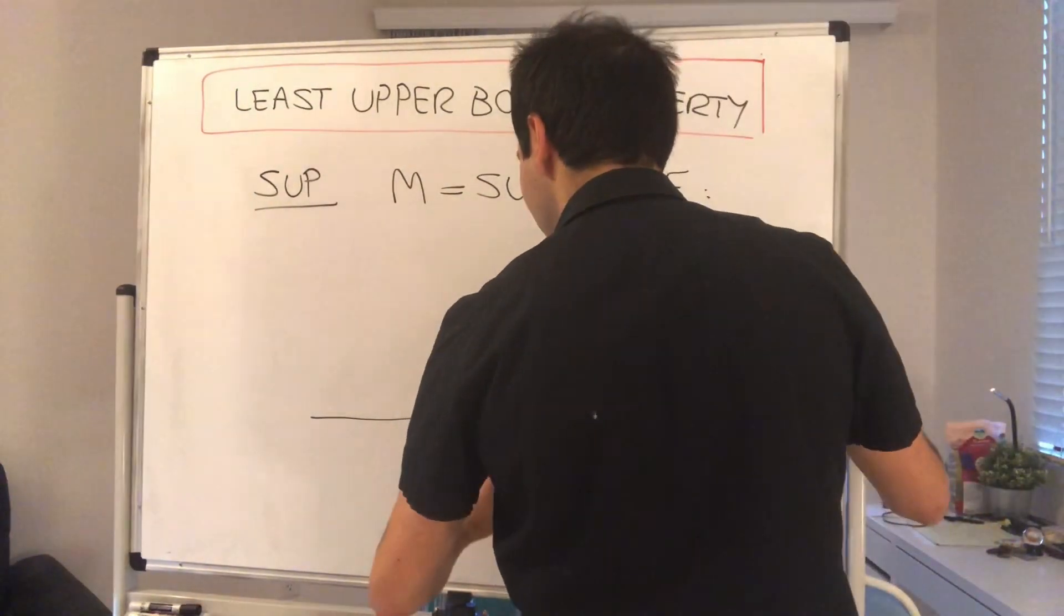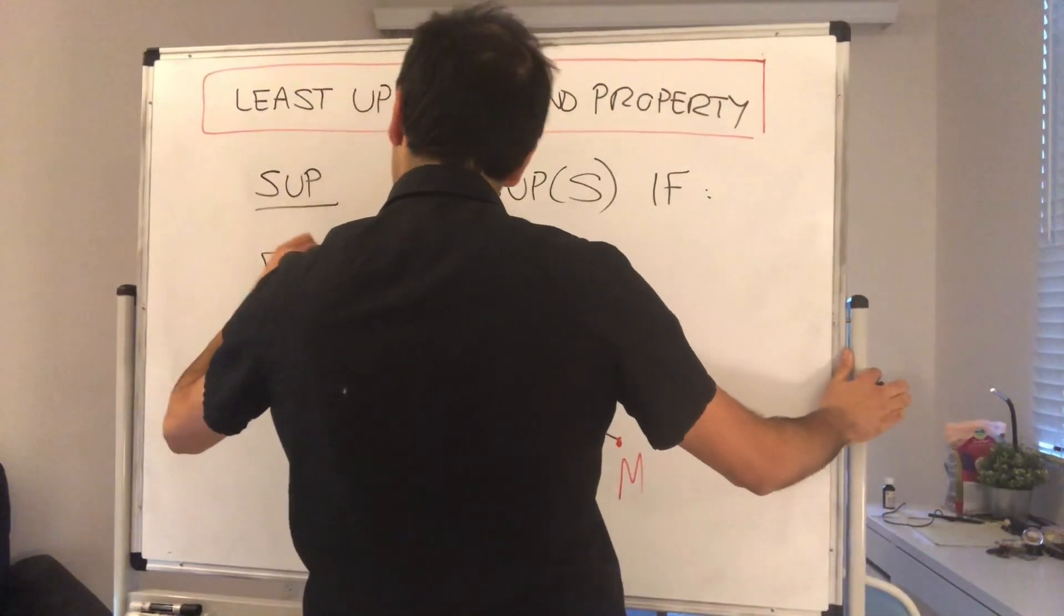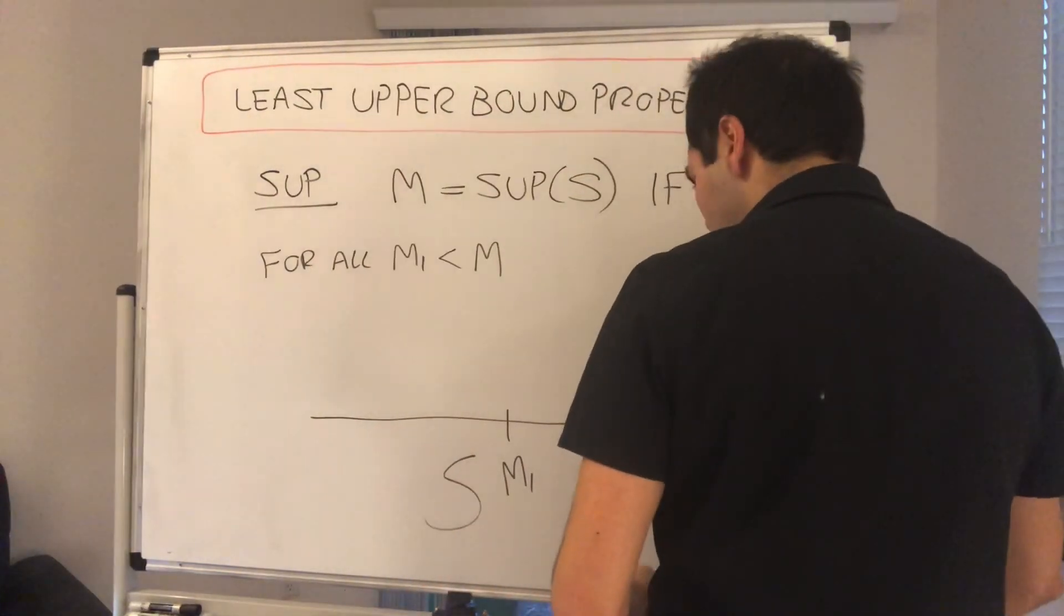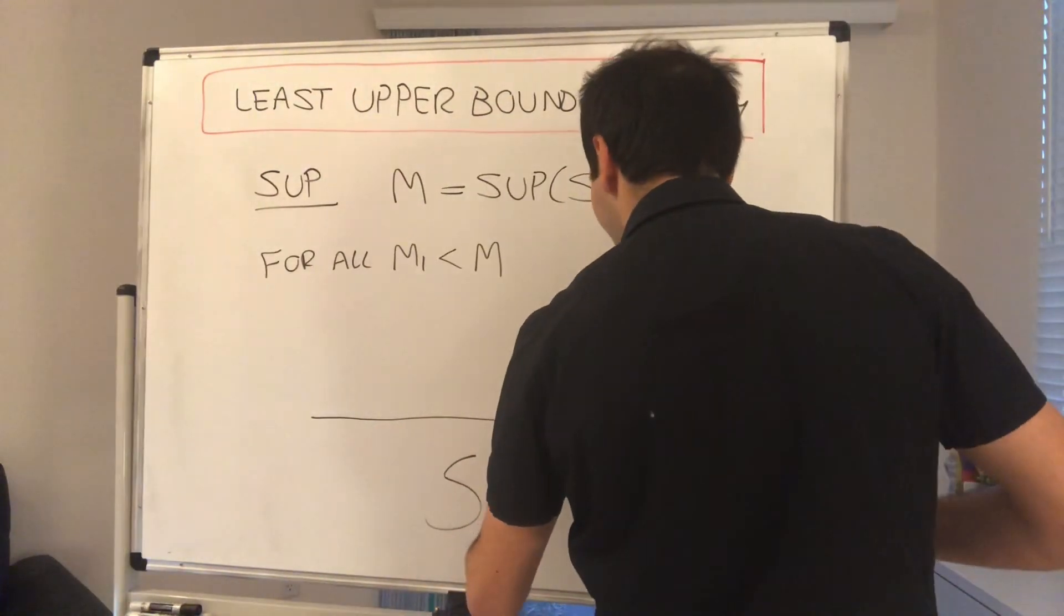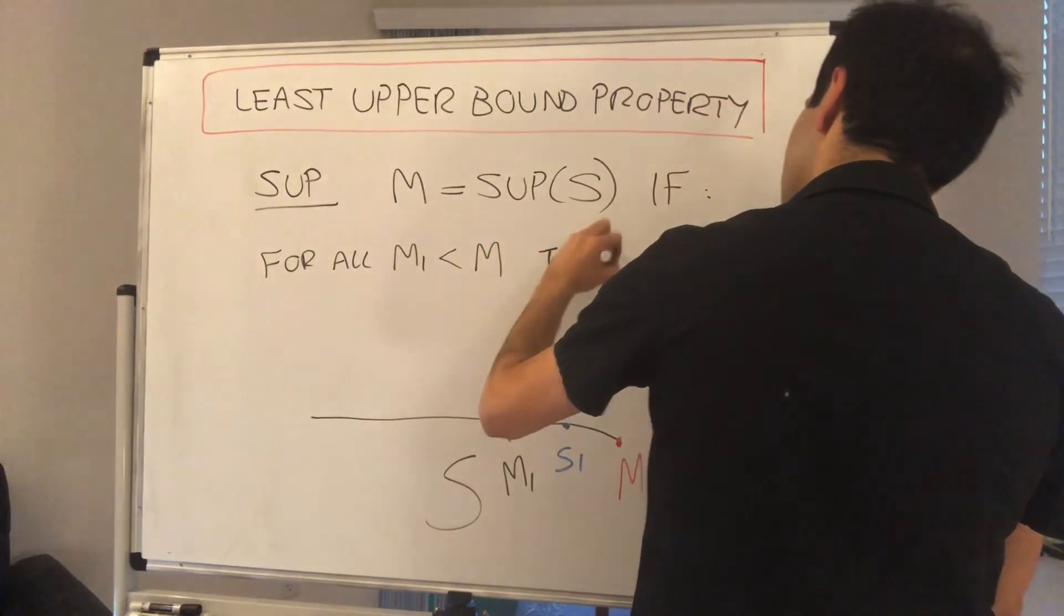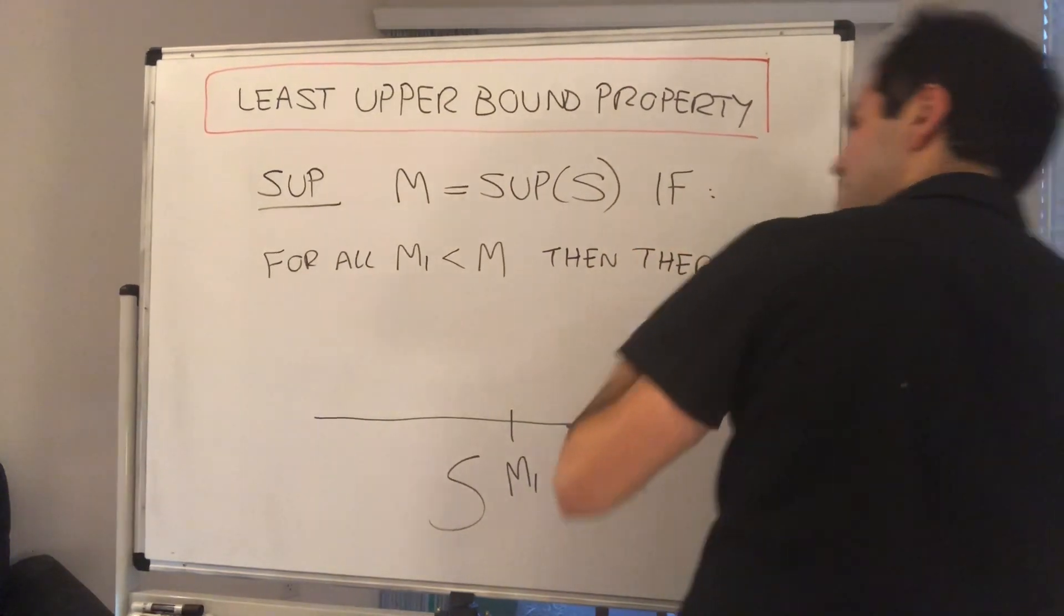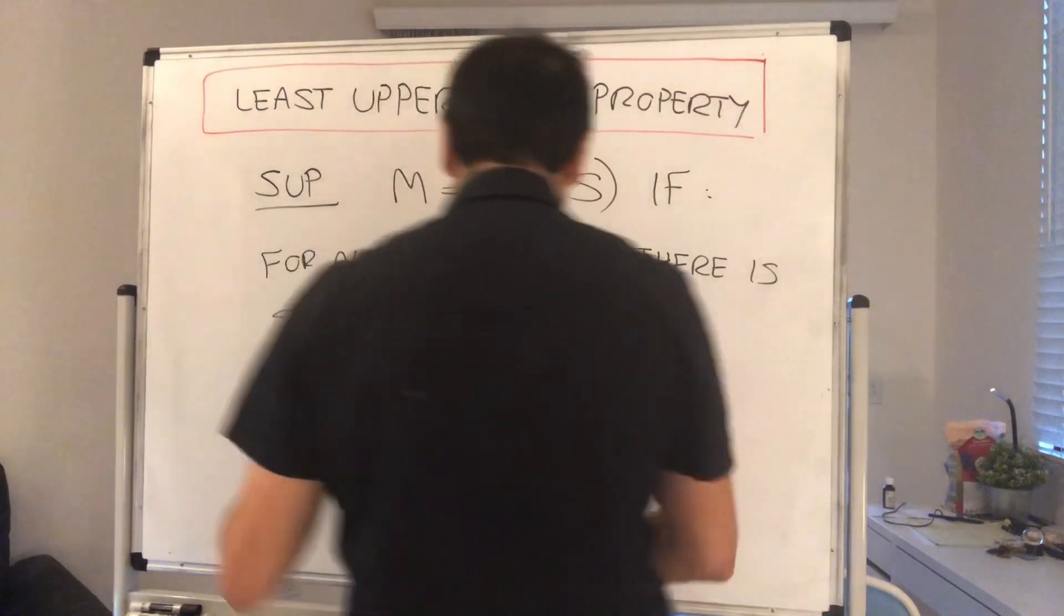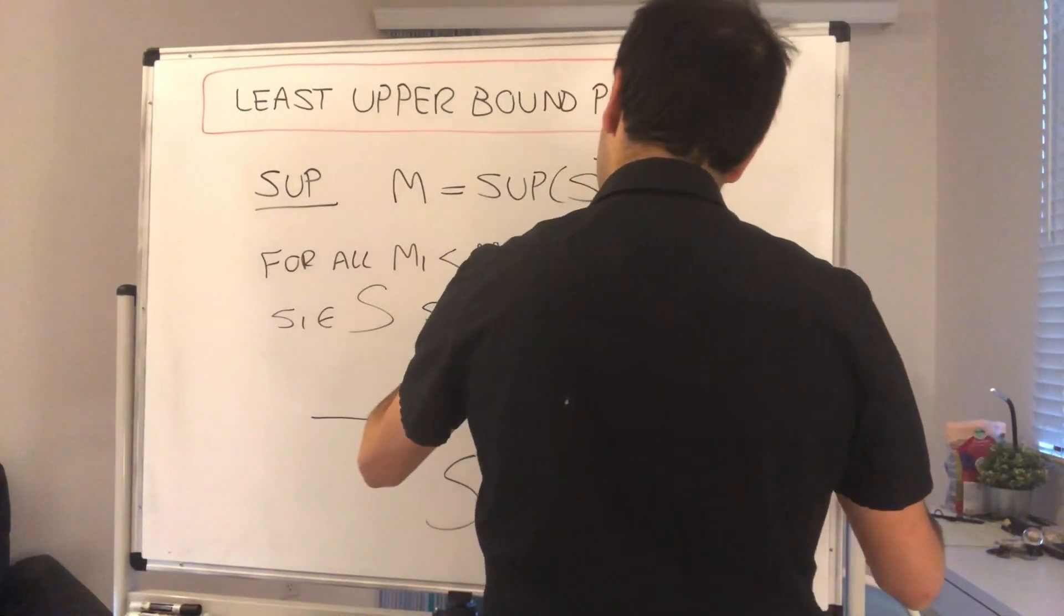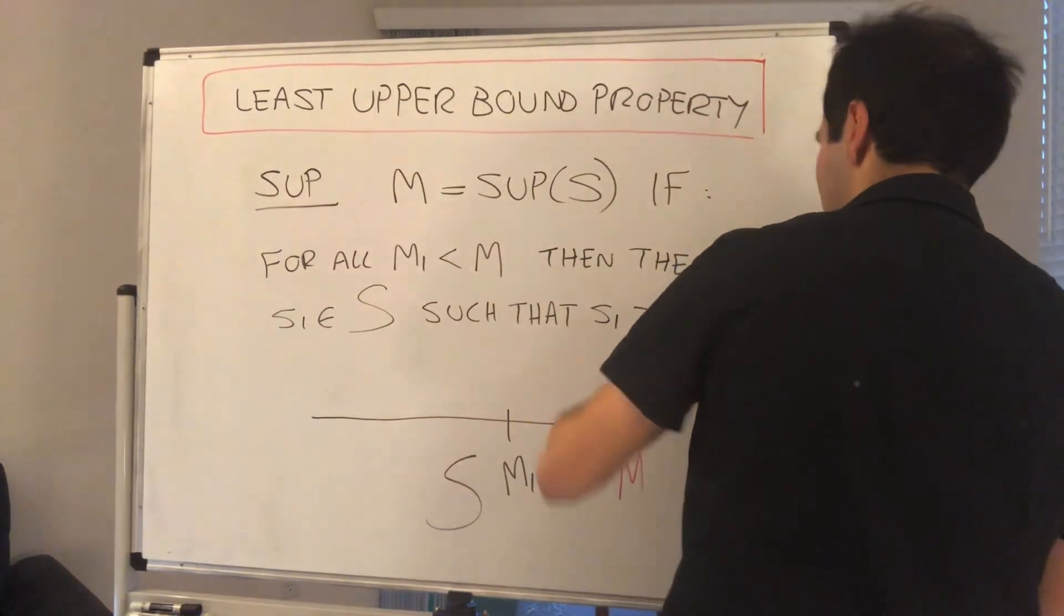Whenever I give you a number that's smaller than M, so for all M1 strictly smaller than M, there is some element S1 in S that's actually bigger than that number, such that S1 is strictly greater than M1.